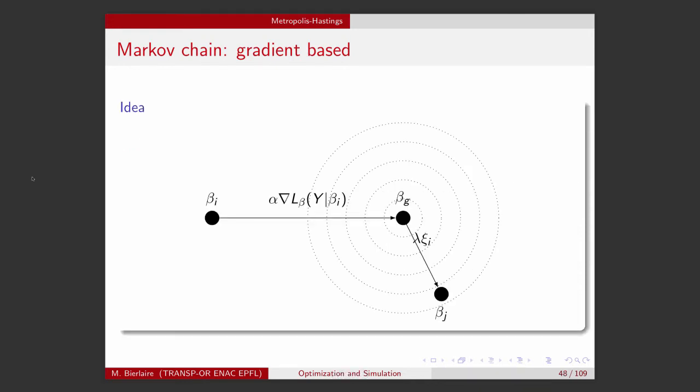So this is an illustrative representation of the idea. So I'm starting from the current state beta_i. I move deterministically along the gradient by a step alpha, and I obtain the point that I call beta_j.